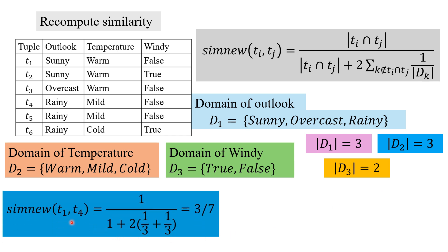We recompute similarity for the same tuples but now looking into the domain. The domain of outlook has three values, temperature has 3, windy has 2. When you compute for t1, t4 considering domain size, we get 3 by 7, while for the new measure t2, t3 comes as 3 by 8. These are different now.